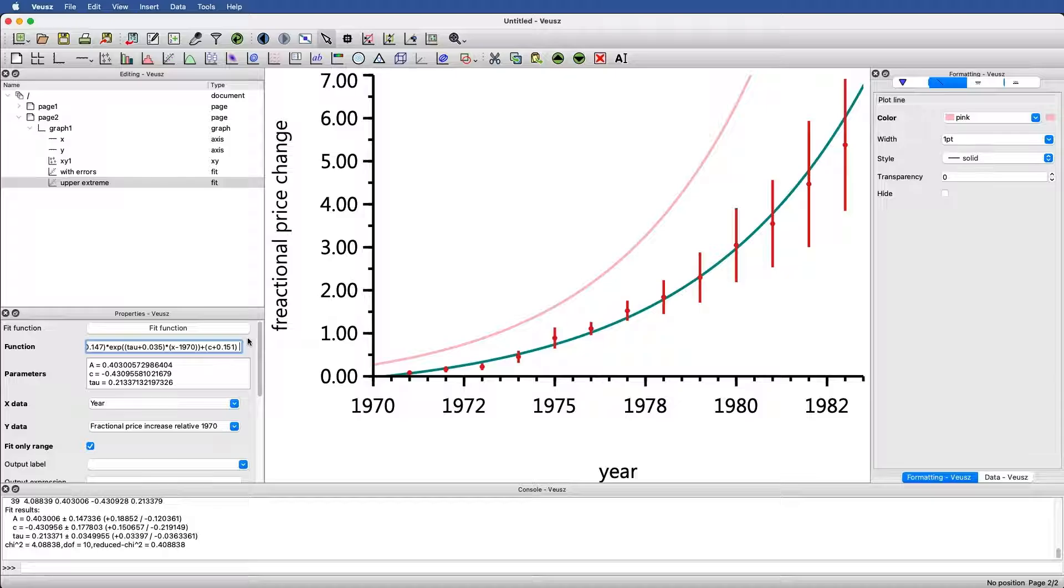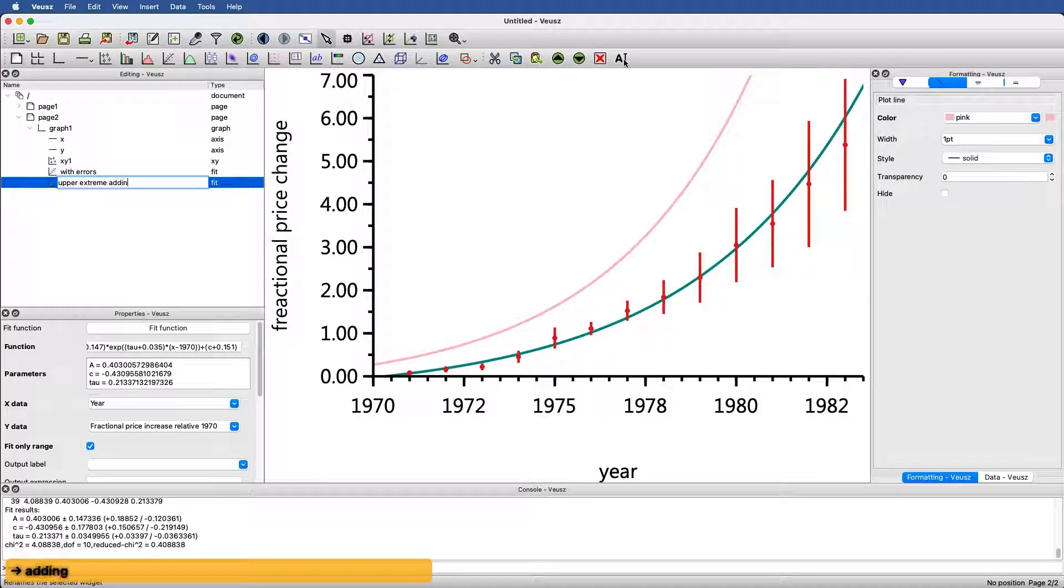This would be the upper extreme of this fit. You could modulate this as you like. For instance, you could multiply each one of these by something like half if you wanted or not. For now, let's just leave it as it is. I know this is different in the posted image in the assignment, but it's still giving us an upper extreme. This is basically the upper extreme where we've added in the standard error in the fit.